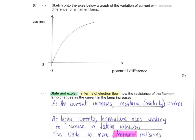Next, you are asked to sketch the shape of the current-potential difference graph for a filament lamp. This is the shape shown. Do be careful — it is possible that an exam question could label these two axes either way round, so you must think about the shape and make sure it corresponds to the correct meaning.